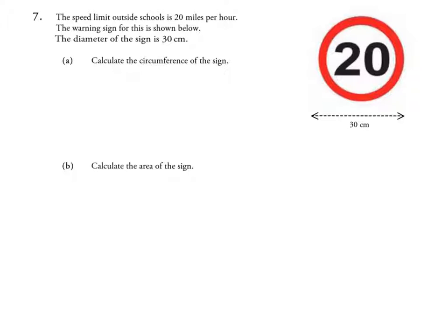This question here is asking us to work out the circumference of this circle. Looking at the formula sheet, which is at the front of the exam paper, we see that the formula for circumference is C equals pi times D.